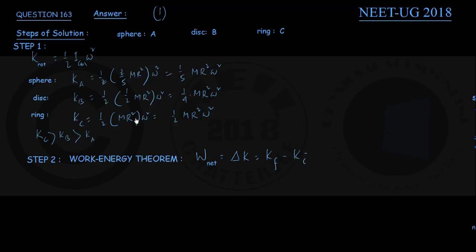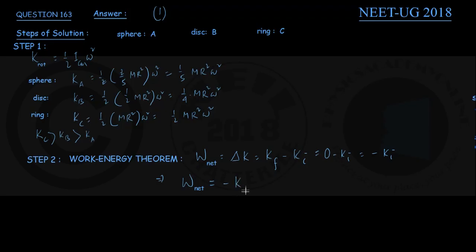In all three cases the bodies have to be brought to rest, so the final kinetic energy K_F is zero. This gives net work equal to 0 minus K_initial, that is equal to minus K_initial. So the net work to be done on each rotating body equals the negative of its initial kinetic energy.